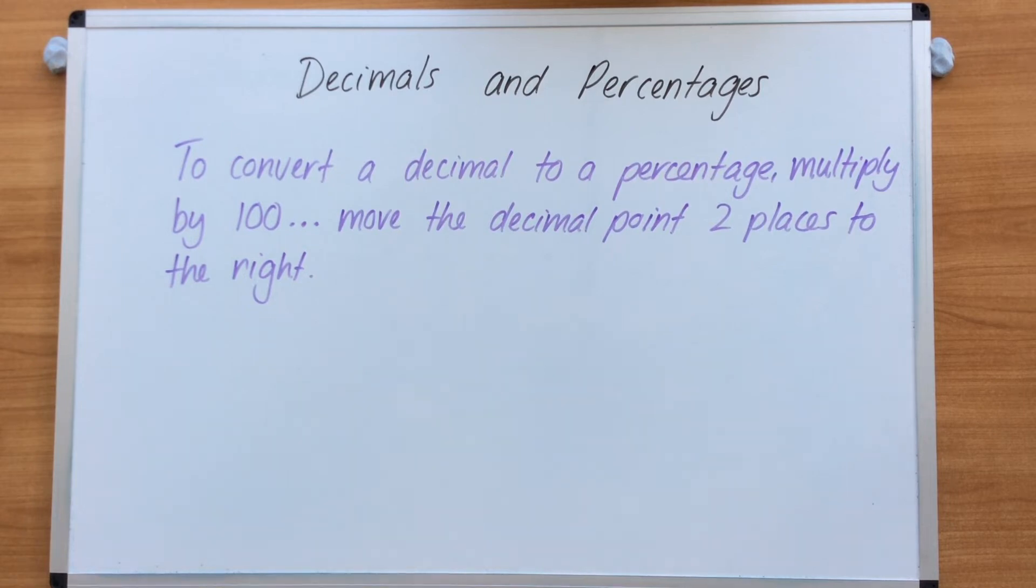We're now going to convert a decimal to a percentage. You multiply by 100. Before, we went the other way around, from percentage to decimal, and we divided by 100.